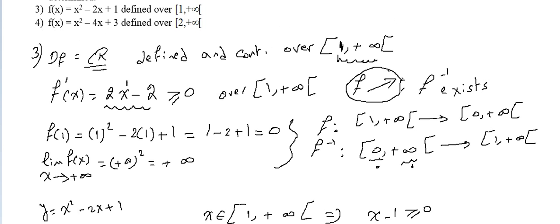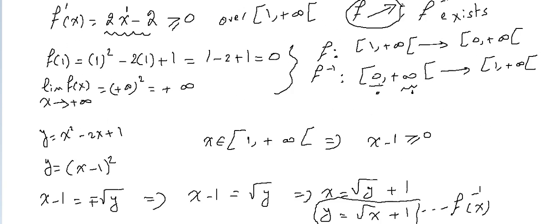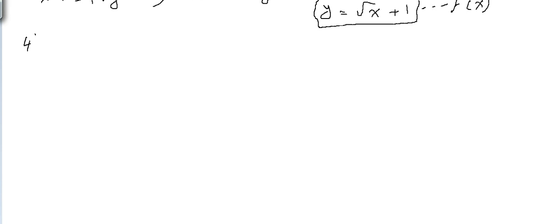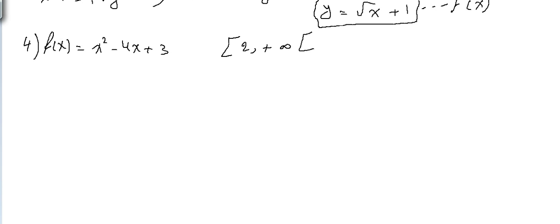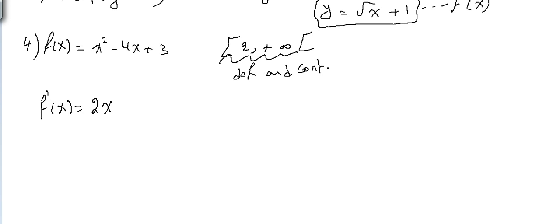Example 4: f(x) = x² - 4x + 3 on [2, +∞). Same procedure — domain of definition is ℝ, so f is defined and continuous over [2, +∞). The derivative is f'(x) = 2x - 4. Substituting x = 2: f'(2) = 0, and f'(x) ≥ 0 for all x ≥ 2, so f is strictly increasing and f⁻¹ exists.